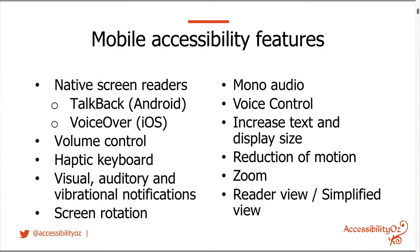Why is mobile different? Firstly, there are native screen readers built into mobile devices that you often don't see in PCs — things like TalkBack on Android, VoiceOver on iOS. You have volume control, a haptic or vibrational keyboard, visual, auditory or vibrational notifications, screen rotation, mono audio, voice control, increased text and display size, reduction of motion, zoom, reader view and simplified view.